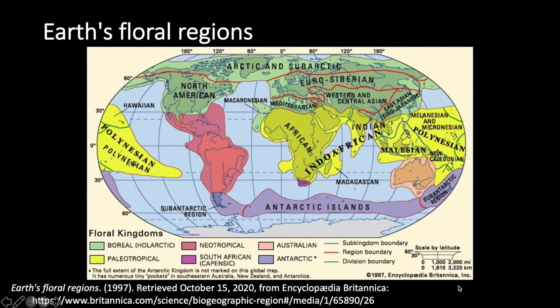There are exactly six floral kingdoms: the Boreal or Holarctic, the Paleotropical, the Neotropical, the South African or Capensic, the Australian, and lastly the Antarctic. These kingdoms are not sharply delineated, of course, and the families of higher plants vary in degree in which they are found across the phytogeographic kingdoms, with their distribution being only partly dependent on age.